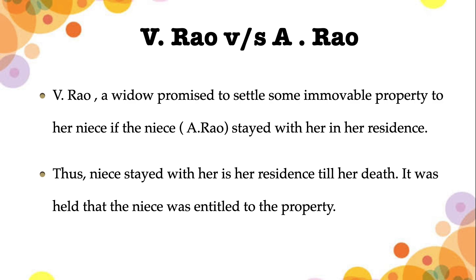The niece agreed to the terms and came to stay with V Rav until her death. It was held that the niece was entitled to the property. Notably, the niece never orally stated her acceptance or gave a written statement — but her conduct and behavior communicated her acceptance to the widow. This is called implied acceptance: by behavior or conduct, acceptance is communicated. Once V Rav died, the entire property was transferred to A Rav.